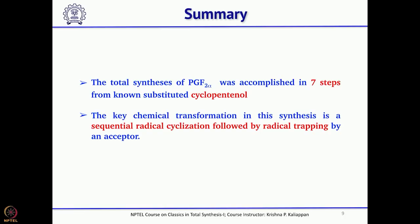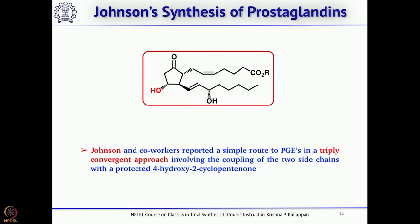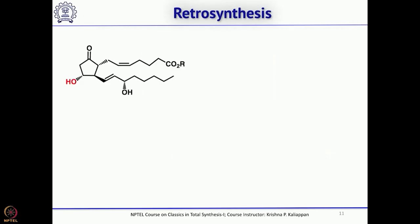The next key step was the 5-exo radical cyclization followed by trapping of the radical with acceptors. We will now move to the third total synthesis of prostaglandins by Carl Johnson's group. The key reaction here was a 1,4-addition to cyclopentenone followed by quenching the enolate with an electrophile — both side chains are introduced in one step via 1,4-addition followed by trapping of the enolate.